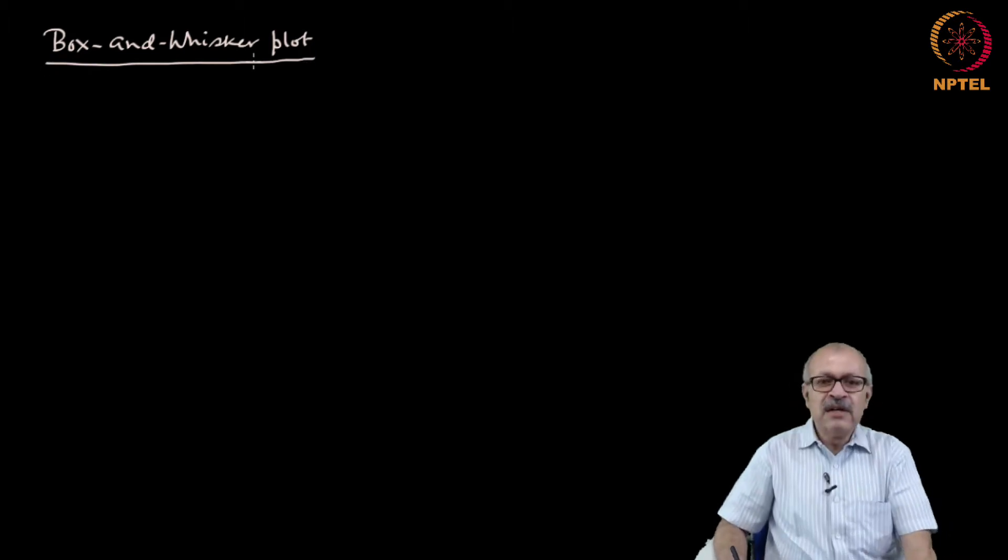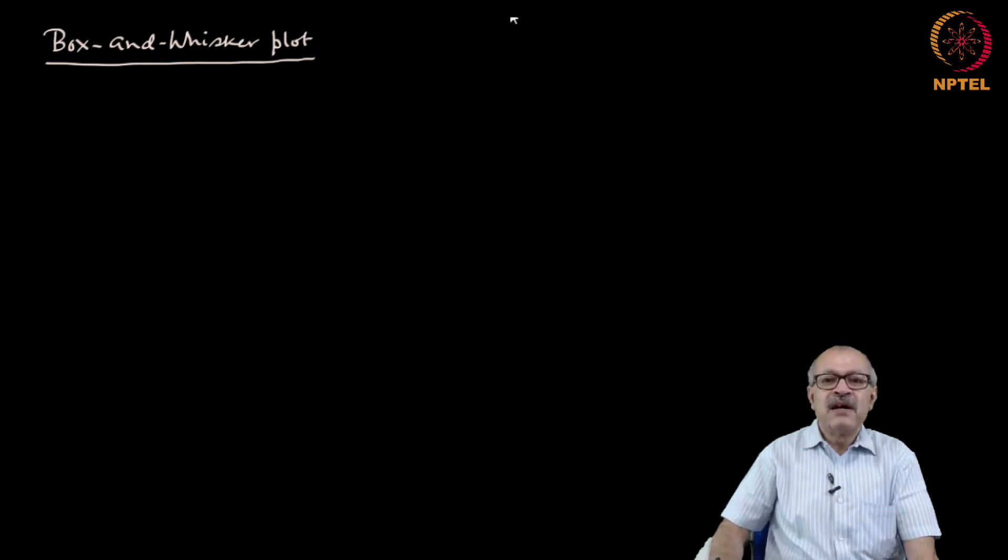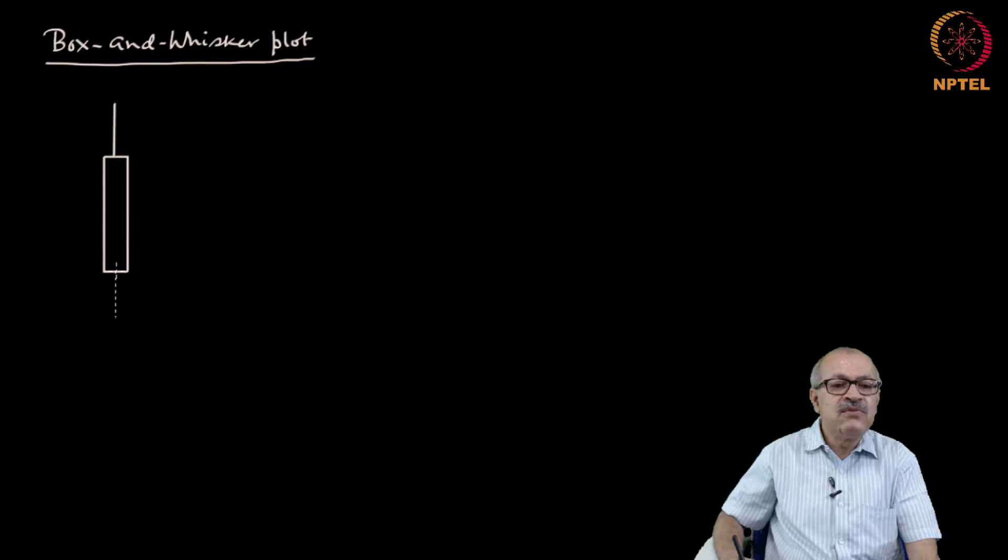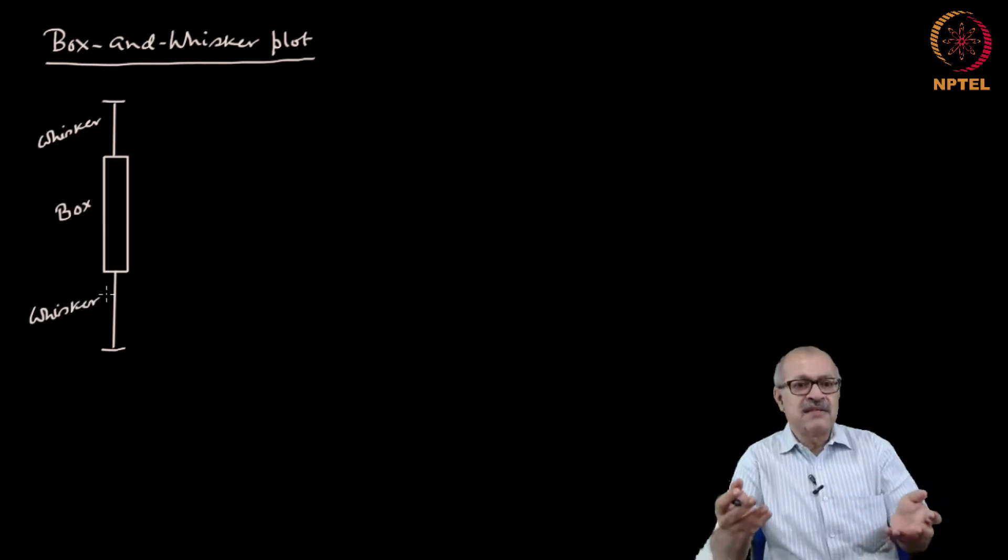In a box and whisker plot, there is a box and there are whiskers. For example, you can have this as the box and this are the whiskers. This is the box and this is the whiskers. Now, how do we represent a data set like this?